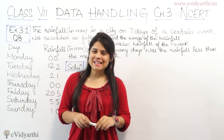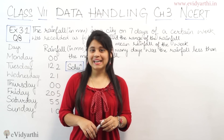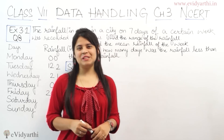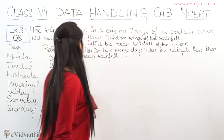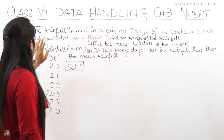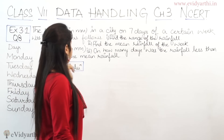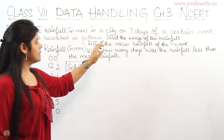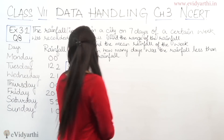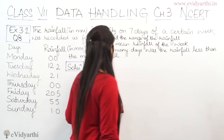Hello everyone, this is Mansi from Vidyati. Coming to question number 8, exercise 3.1. This question states: the rainfall in millimetres in a city on 7 days of a certain week was recorded as follows.